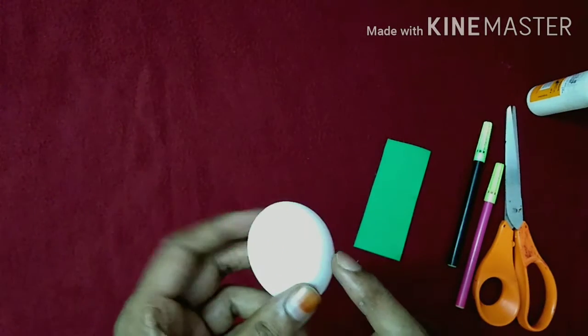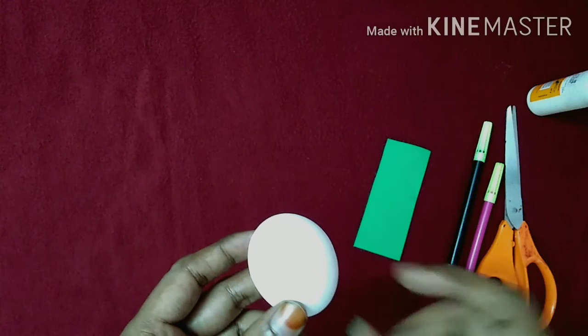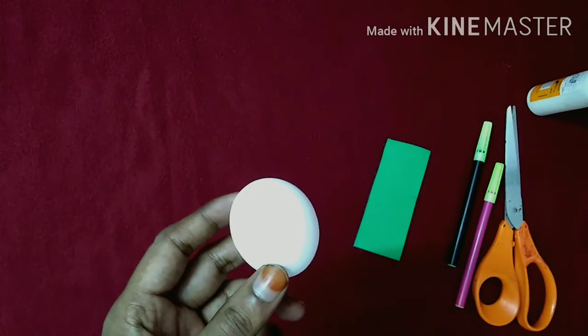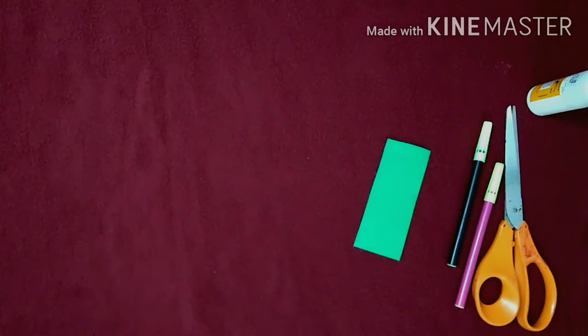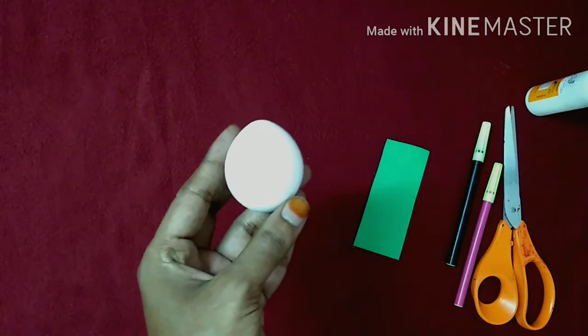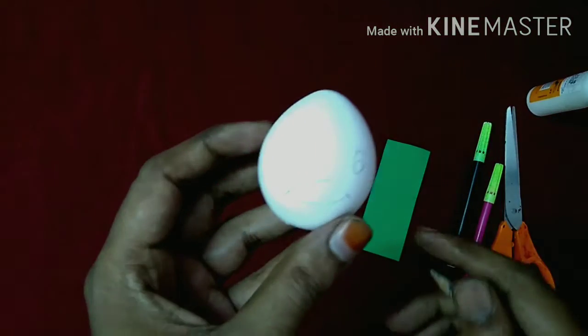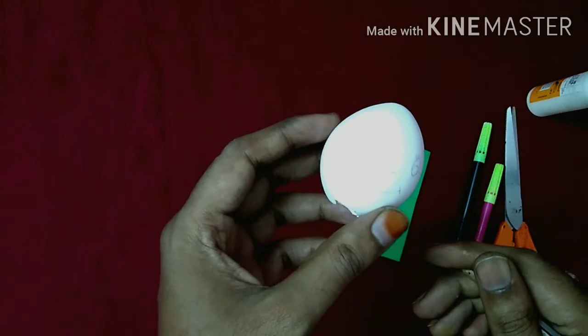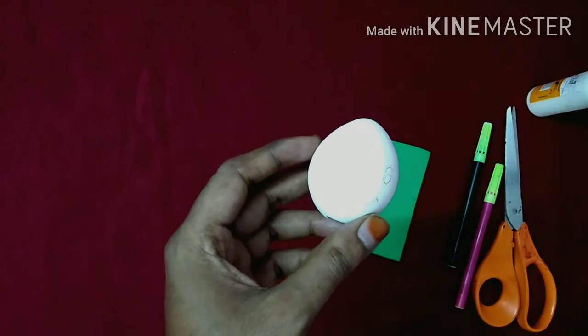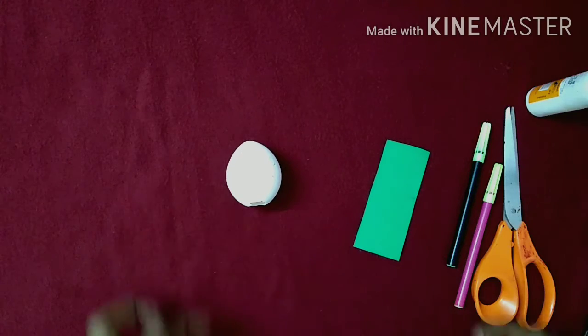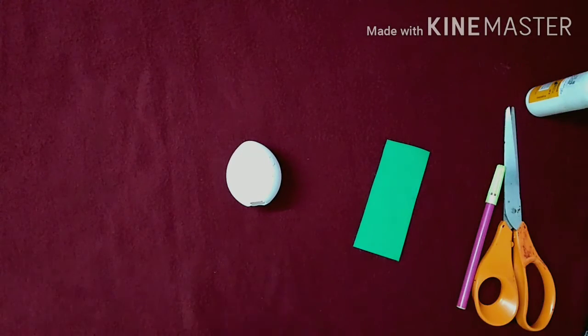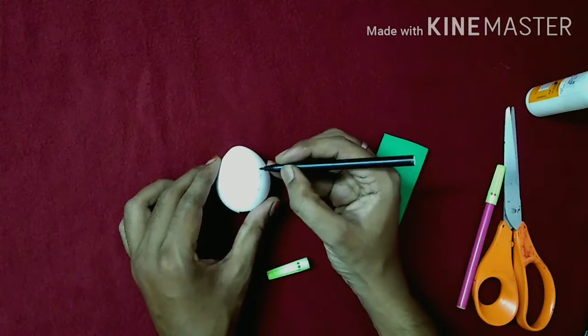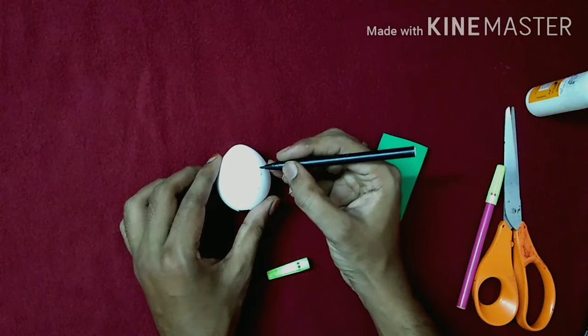I already prepared this eggshell. Take a pencil and draw here eyes, nose, and mouth like this. Okay, now take black color sketch pen to draw the eyes. I will show you here.